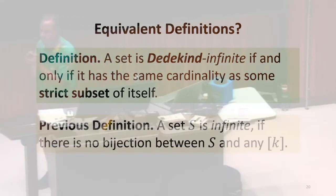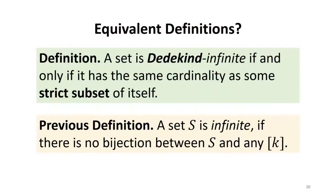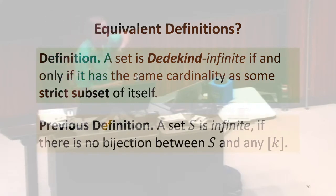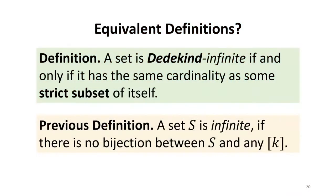Are these definitions the same? And so now we've got two definitions. We have the one that we used last class that says it's infinite if there is no bijection between the set and any set of natural numbers up to k, for any k. And we have the definition that Dedekind came up to that said it's infinite if it is the same cardinality as a proper subset of itself. Do those seem like they mean the same thing? Yeah.